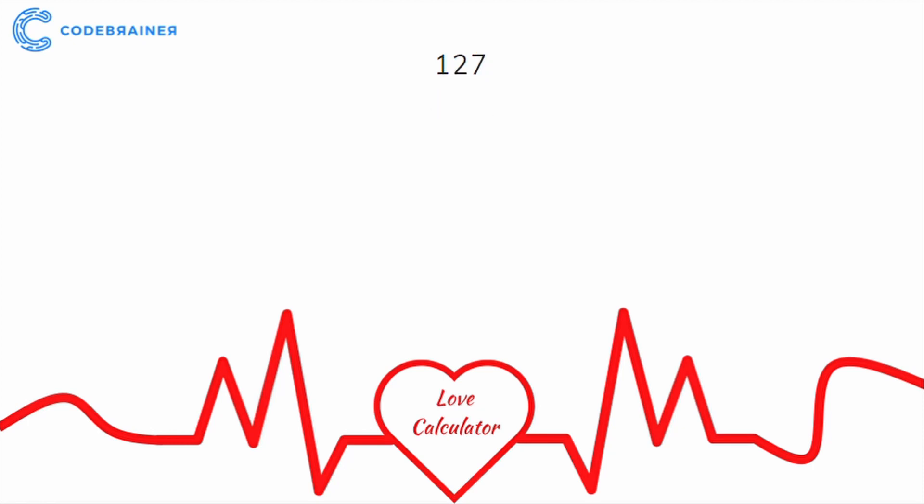Let's do a bonus example. There was someone with 127% in the comments. Like all examples, we need one more step. We add together 1 plus 7 and write down 8. There is only one number left, so we just write down 2. We get 82% of love — still a great love percentage. Have a nice day.